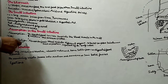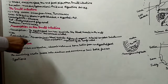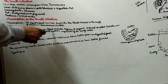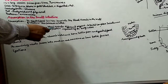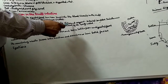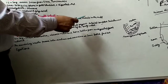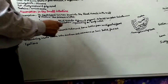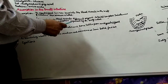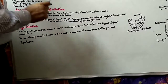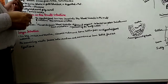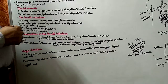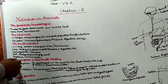Ab assimilation kya hai - absorption mein jo food absorb kiya gaya hai, wo blood vessels mein chala gaya. Blood vessels se yeh different organs mein chala jaata hai. It builds complex substances such as protein, jo body ke dwara required hoti hai. This process is called assimilation. Pache hue bhojan ka different organs mein jaana aur wahaan par complex substance ka banna, jaise protein, jo shareer ke liye aavashyak hota hai, iss process ka naam assimilation hai.